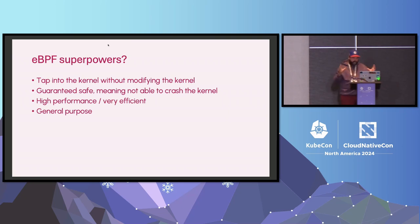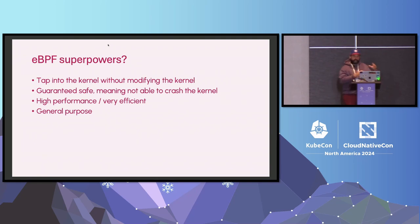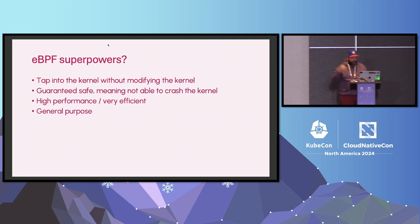It runs in a sandbox, so it is guaranteed safe, meaning you cannot crash the kernel. Previously, you could only get this kind of information through a kernel module, which shared memory, so it was unsafe. It's high-performant and very efficient. It runs in the kernel and is event-driven — you attach it to a resource in the kernel, and when an event happens it executes. In our case, it puts that data into a ring buffer, which you can pull out from user space.